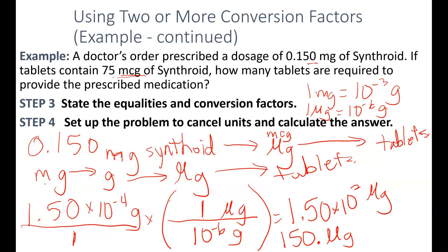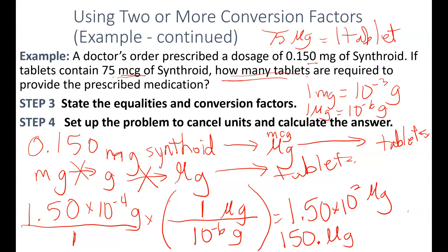Now I have 150 micrograms — I've completed the milligrams-to-grams step and the grams-to-micrograms step. Now I need to get from micrograms to tablets. I have 150 micrograms and need to figure out how many tablets to give the patient. The equivalence from the problem is that 75 micrograms equals one tablet, so we multiply by the fraction: 1 tablet over 75 micrograms. Multiplying through, we can give this patient 2 tablets as the final answer.